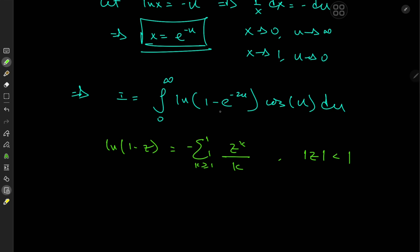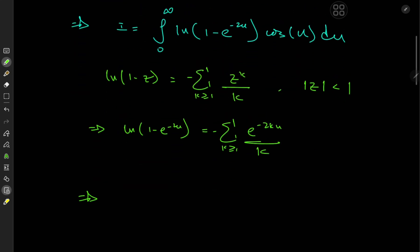Which is of course valid for z equal to e^(-2u) on this interval of integration. So this implies that log(1-e^(-2u)) equals negative sum over k e^(-2ku) over k. And plugging this into our integral gives us I equal to the integral from 0 to infinity cosine(u) times the sum over k of e^(-2ku) over k du.